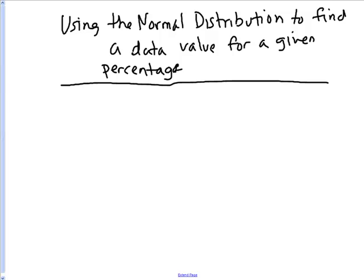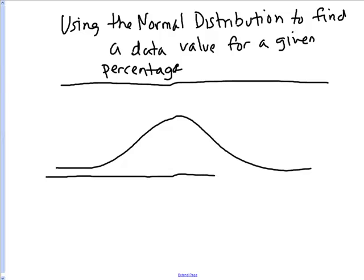So let's say that the distribution is normal and the mean is two hundred. Our standard deviation is twenty.